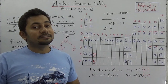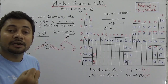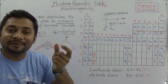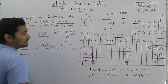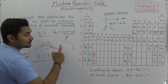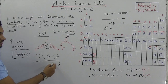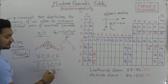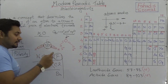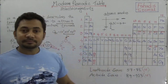Electronegativity is exactly the tendency of an atom to attract the shared or paired electrons to itself when it takes part in a covalent bond. It is a periodic property because the electronegativity of fluorine is greater than oxygen, and oxygen is greater than nitrogen — so going right, electronegativity increases. Similarly, chlorine's electronegativity is higher than sulfur's, and sulfur's is higher than phosphorus's. Going downwards, fluorine's electronegativity is higher than chlorine's, and chlorine's is higher than bromine's.